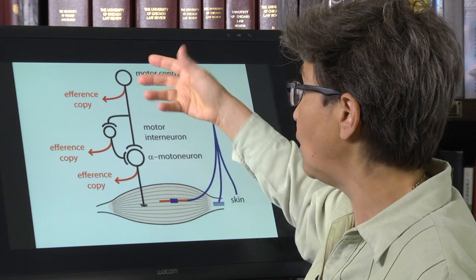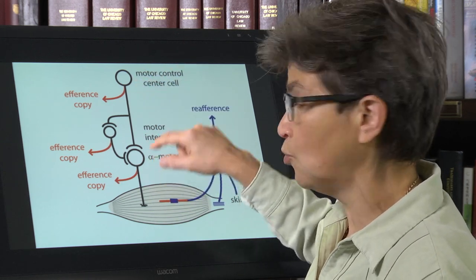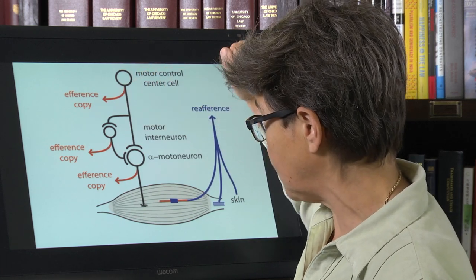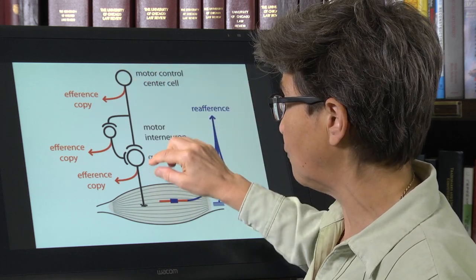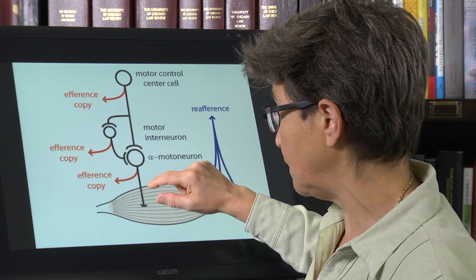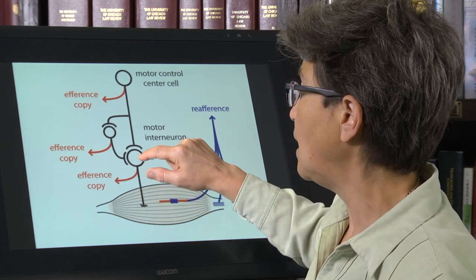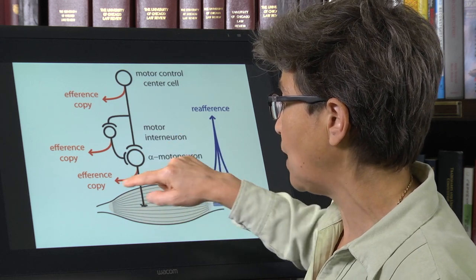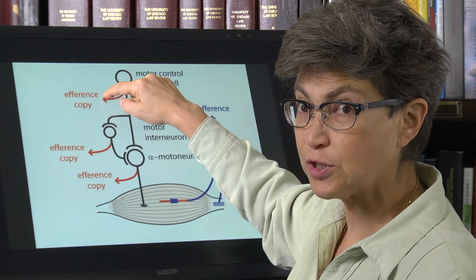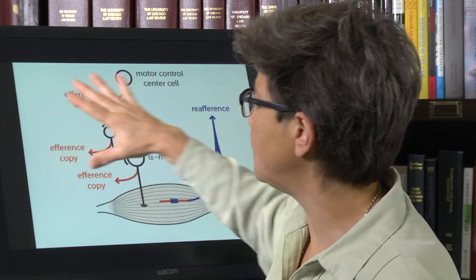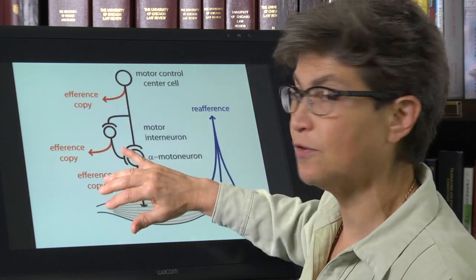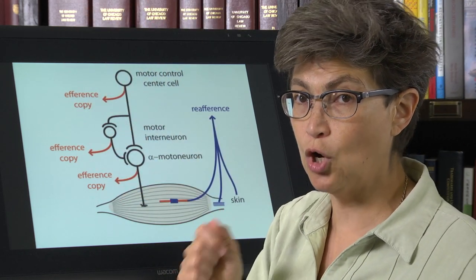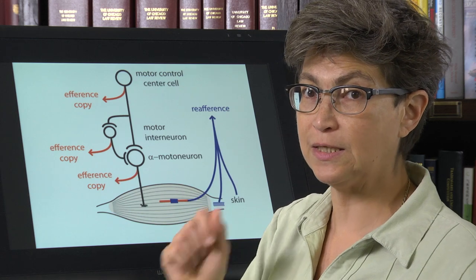Why is it different? Well, for one, the alpha motor neuron has a few more ears than just an ear to the upper motor control center cell. So it's getting other information from more local neurons. And so the actual command that's put out may be a little bit different from the first efference copy. All of these different versions of efference copy go to the cerebellum. So the cerebellum knows what is the intended movement.